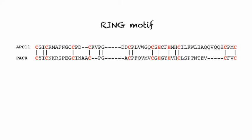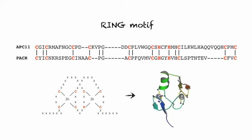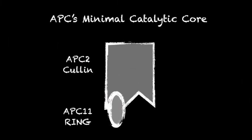Analysis of PACER's predicted amino acid sequence revealed homology to APC11, more specifically to its ring motif, a sequence composed of a group of cysteine and histidine residues which bind to two zinc ions to form this unique structure. To form APC's functional core, APC11 must bind APC2. Given the homology shared with APC11, PACER was thought to also bind APC2.